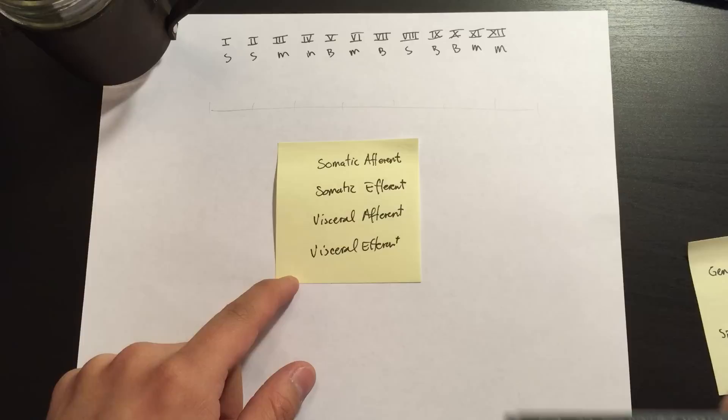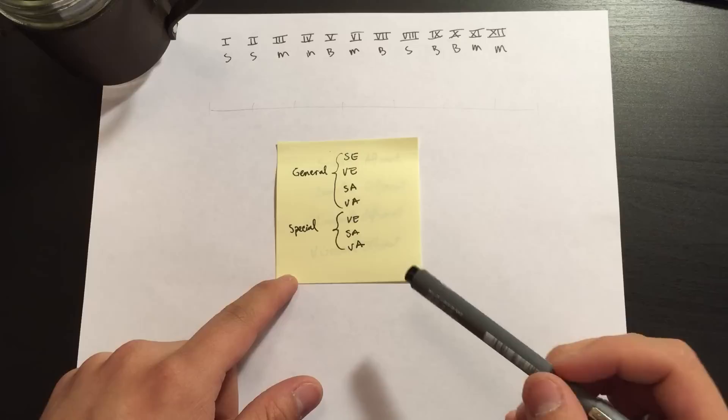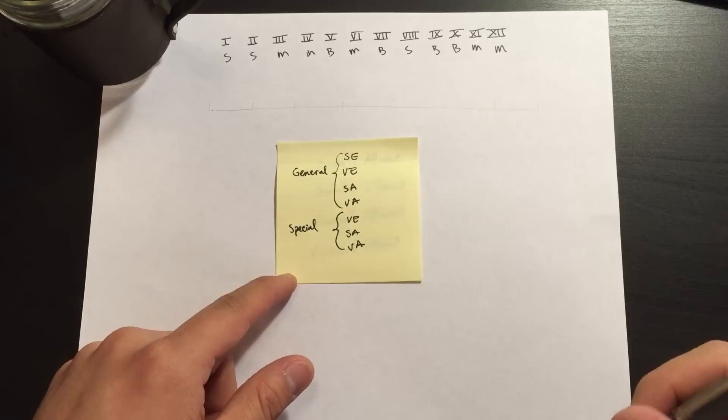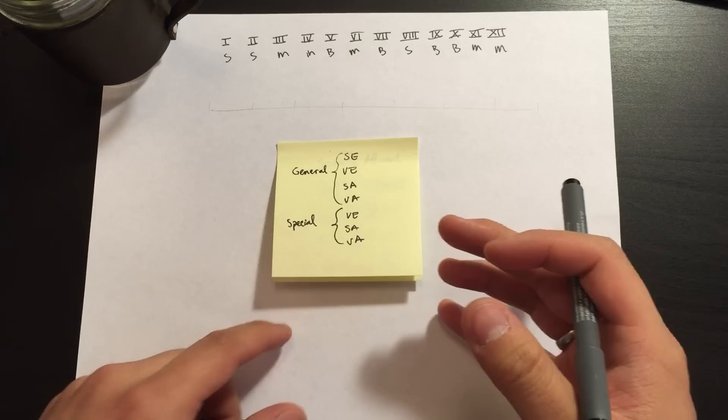And then you can also divide them into somatic, which refers to our body in general, versus the visceral which is our guts and organs. And then these can be put into categories of general which goes to our general body or special which are the ones that are going to pharyngeal arches or contain receptors that are unique or special such as the receptors in the eye and the nose.